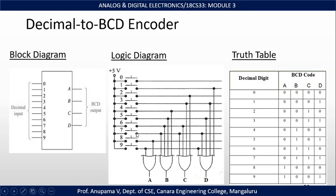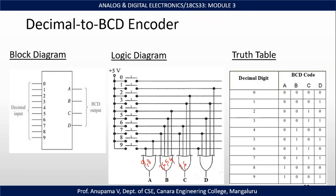This is the logic or circuit diagram of the decimal to BCD encoder, also called the 10-to-4 line encoder. Depending on the input, the equivalent BCD number is generated. The 10 inputs are connected to a switch; when a particular switch is ON, that input is set to 1, and the OR gate outputs are generated. There are 4 OR gates at the output: OR gate A has inputs 9 and 8; OR gate B has inputs 7, 6, 5, 4; OR gate C has inputs 7, 6, 3, 2; and OR gate D has inputs 9, 7, 5, 3, and 1.